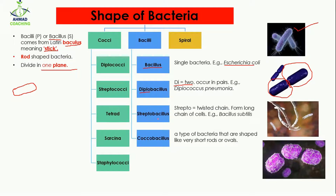Then comes streptobacillus. 'Strepto' means twisted chain, so when bacilli are arranged in a long chain they are known as streptobacilli. The example of streptobacillus is Bacillus subtilis.